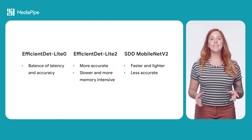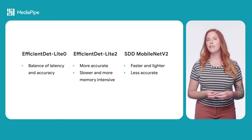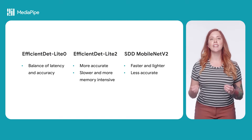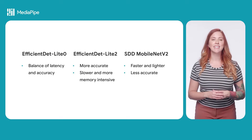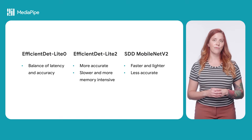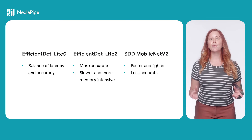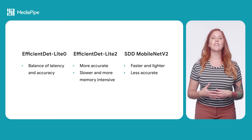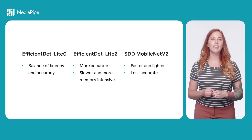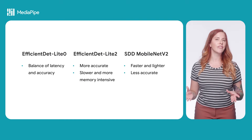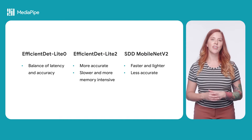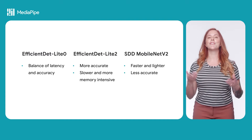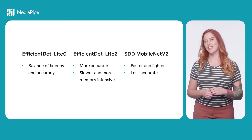The SSD MobileNet V2 model is faster and lighter than EfficientDetLite 0, but also generally less accurate. It's appropriate for use cases that require a fast, lightweight model that sacrifices some accuracy. For more details on each of these models, check the docs.